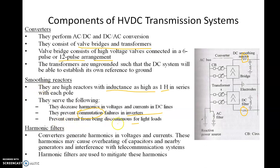The smoothing reactor also prevents current from being discontinuous for light loads. If the load is very light and the current is very low, the current can become discontinuous — it is present for some time, then becomes zero, then starts again. This is called discontinuous current. Since an inductor does not allow sudden change in current, the smoothing reactor keeps the current constant.